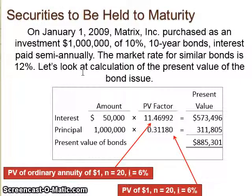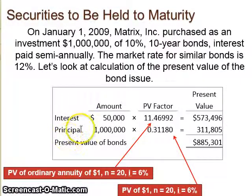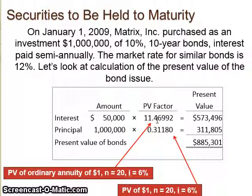So the first thing you have to do if you're buying this bond is look at what the present value is. $1 million is the future value, but we're going to be looking at the present value using those present value tables from Intermediate 1. You're being paid $50,000 in interest, and it's an ordinary annuity paid at the end of each period, with N being 20 — because it's a 10-year bond paid semi-annually, that means 20 payouts.